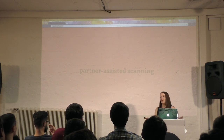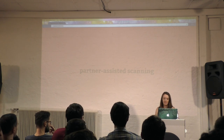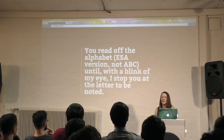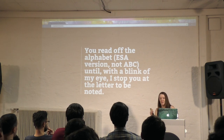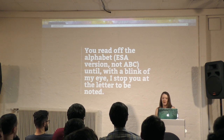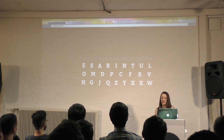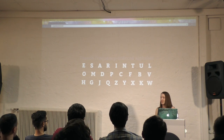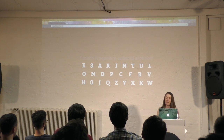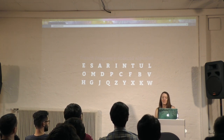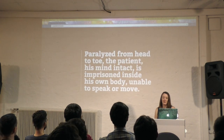The method by which he was able to dictate his memoirs just by blinking is called partner-assisted scanning. He described it in his memoirs: 'It's a simple enough system. You read off the alphabet — ESA version, not ABC — until with a blink of my eye I stop you at the letter to be noted. The maneuver is repeated for the letters that follow, so that fairly soon you have a whole word, and then fragments of more or less intelligible sentences. The jumbled appearance of my chorus line stems not from chance, but from cunning calculation — it is a hit parade in which each letter is placed according to the frequency of its use in the French language.' He worked primarily with a speech therapist and then with a woman he dictated his memoirs to.